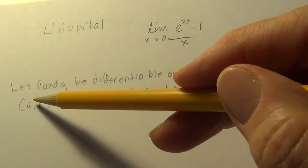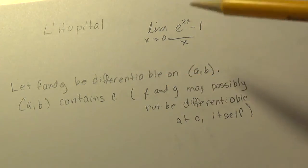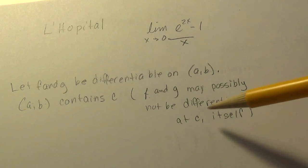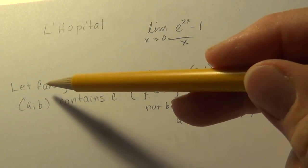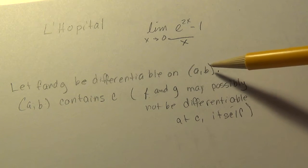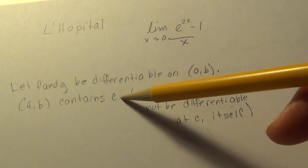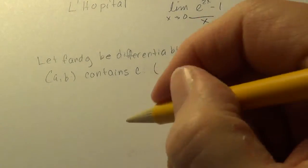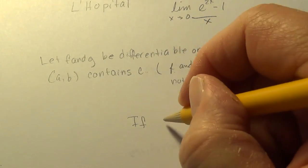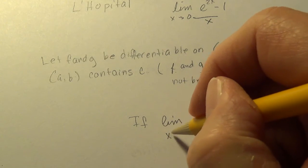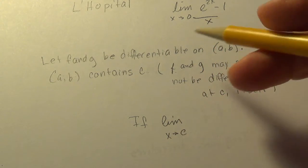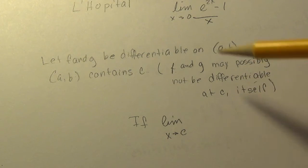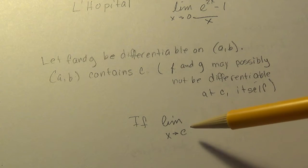So let f and g be differentiable on the open interval a to b. a to b contains c, and I just want to qualify that f and g may possibly not be differentiable at c itself. So when I say f and g is differentiable on (a,b), maybe not at this particular point of interest c.